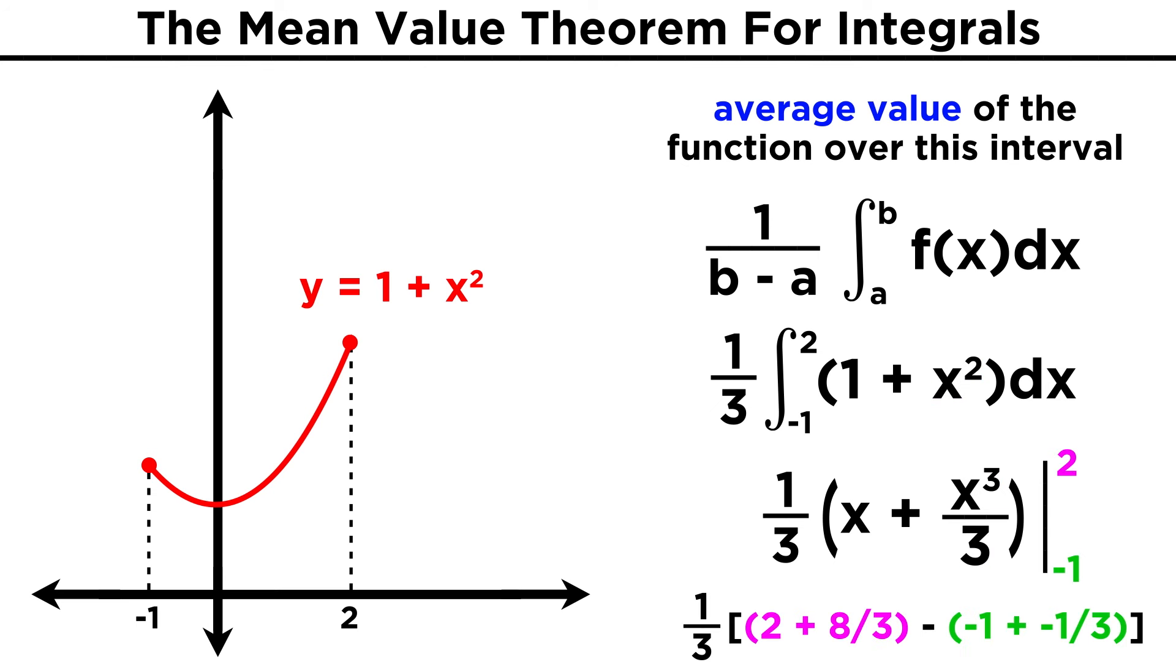We evaluate this at two, and then negative one, finding common denominators to combine the terms, then subtracting, and then multiplying by one third, and we end up with two.